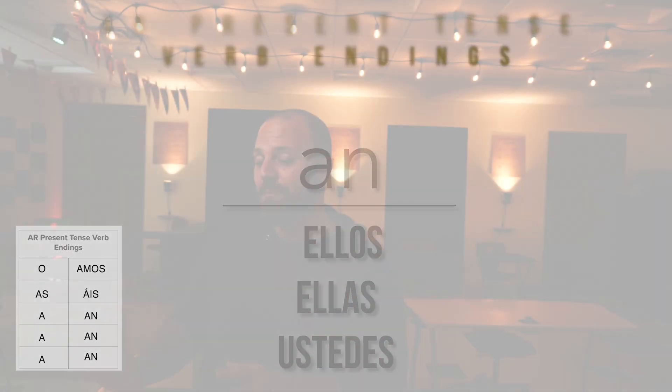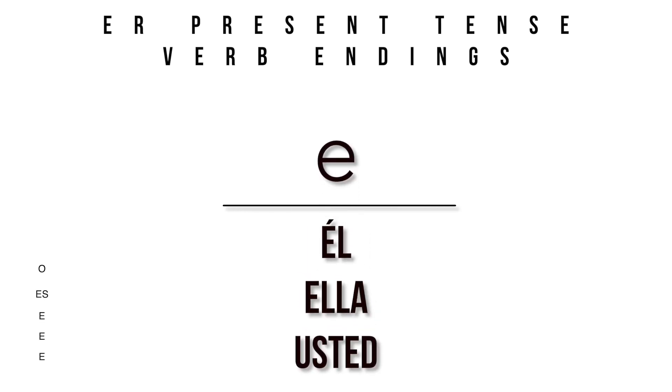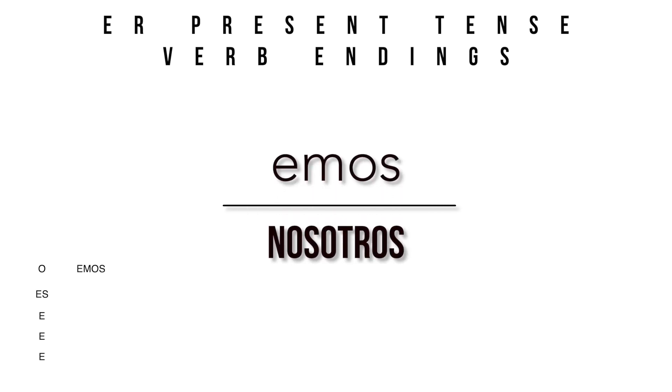For ER verbs, take all the A endings from the AR chart and change them to E. So: yo gets O, tú gets ES, él/ella/usted gets E, nosotros gets EMOS, vosotros gets ÉIS, and ellos/ellas/ustedes gets EN.